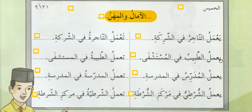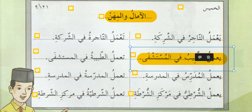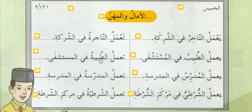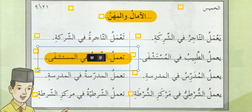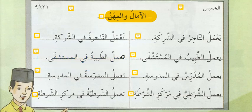Seterusnya ayat yang kedua. Kita baca sama-sama: Ya'amalut tabibu fil mustashfa. Kita tengok untuk mu'annas: Ta'amalut tabibu fil mustashfa. Kamu boleh lihat perbezaan: Ya'amalut untuk muzakar, Ta'amalut untuk mu'annas.